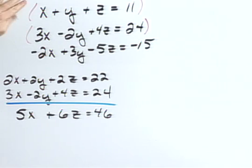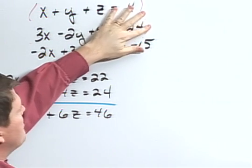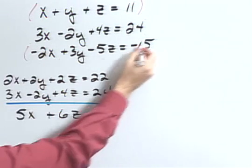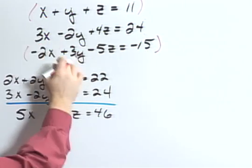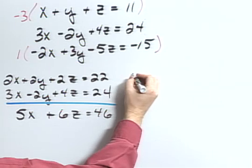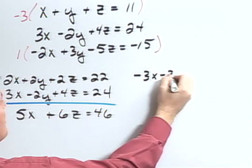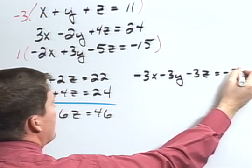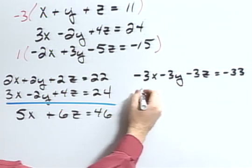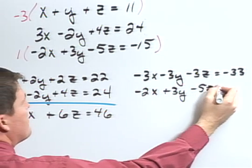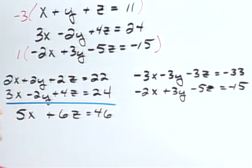Now let's combine not my first two, but my first and my third. So in this case, again I want my y's to drop out. So in order for that to happen, I need to multiply negative 3 times my first equation and 1 times my second. That'll give me negative 3x minus 3y minus 3z equals negative 33, and 1 times my third would give me negative 2x plus 3y minus 5z equals negative 15.